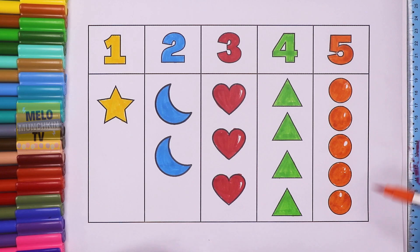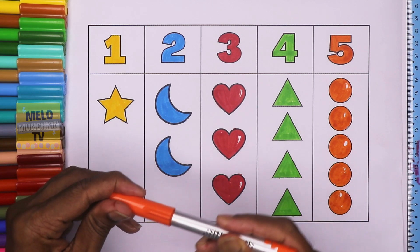1, 2, 3, 4, 5. 5 circles. 1, 2, 3, 4, 5. 5 circles.